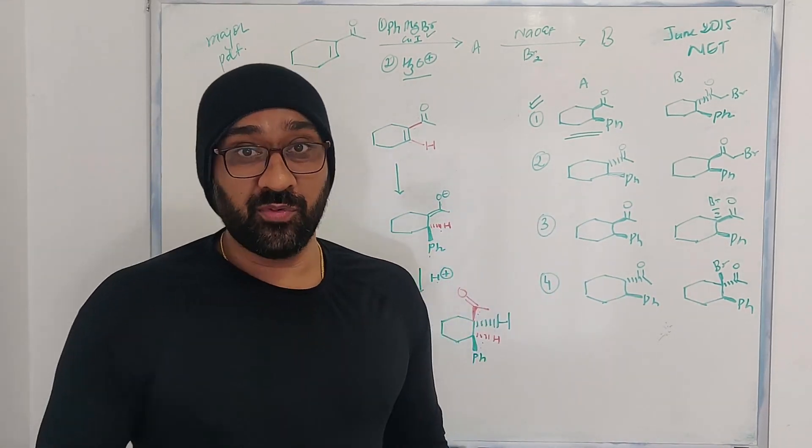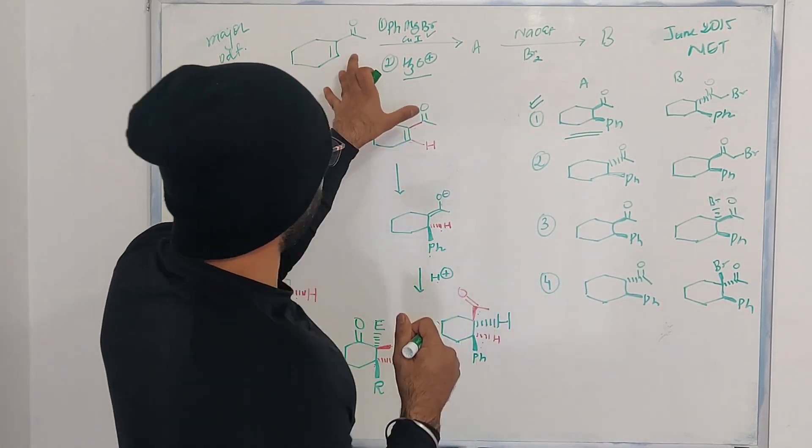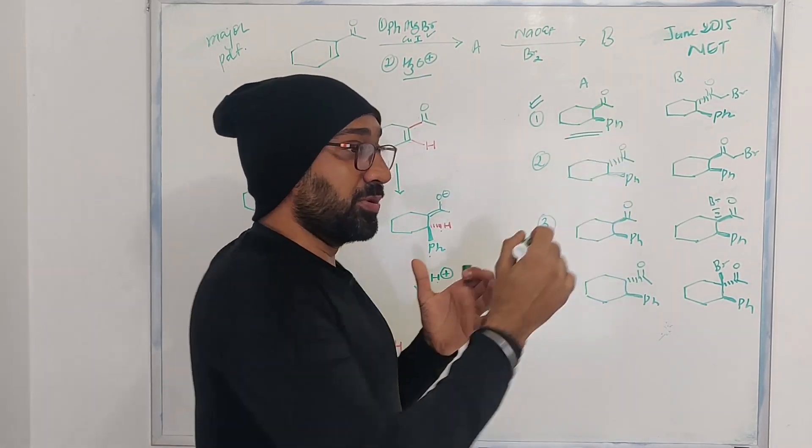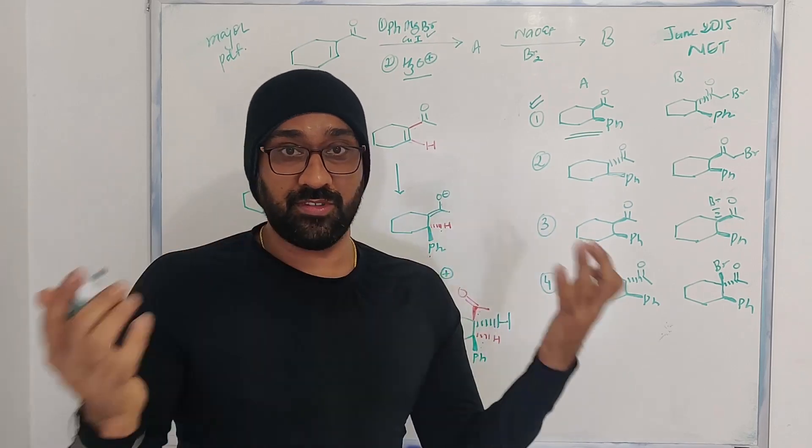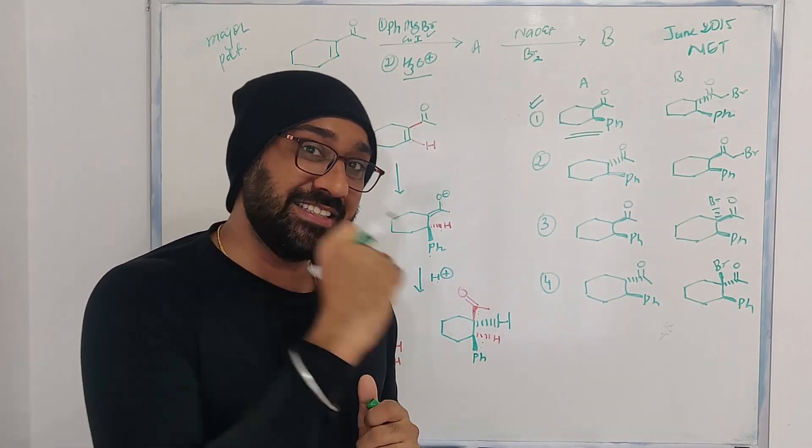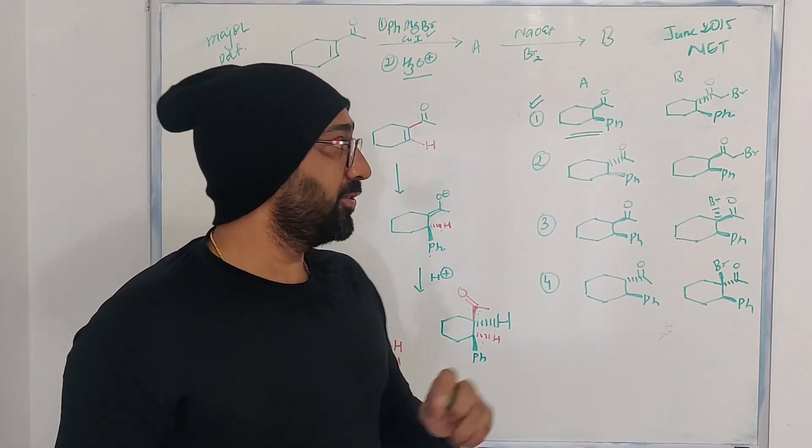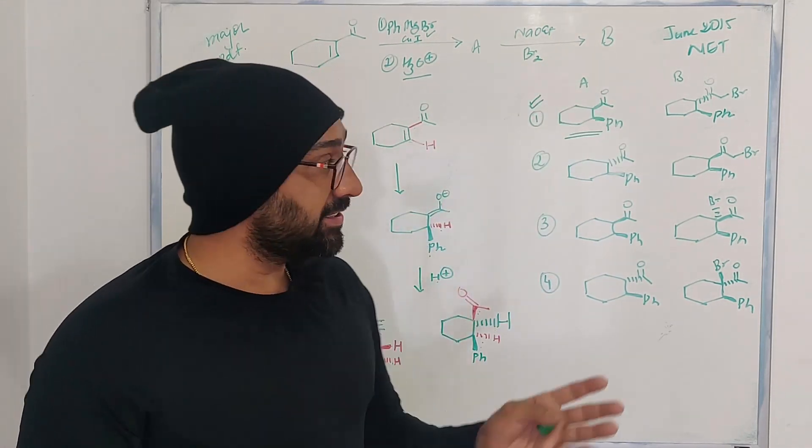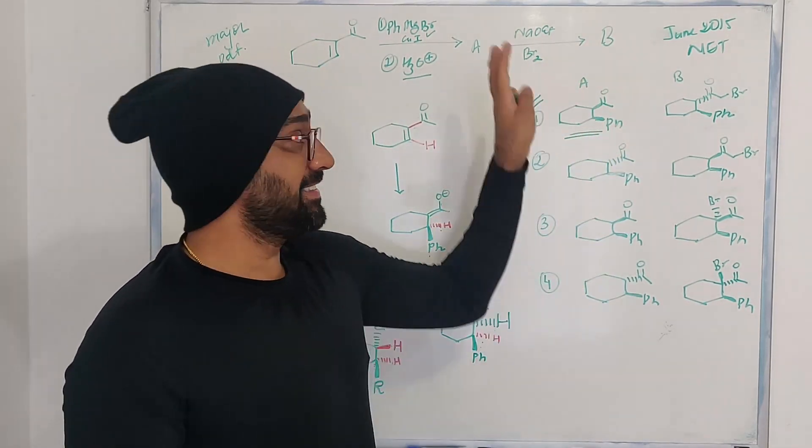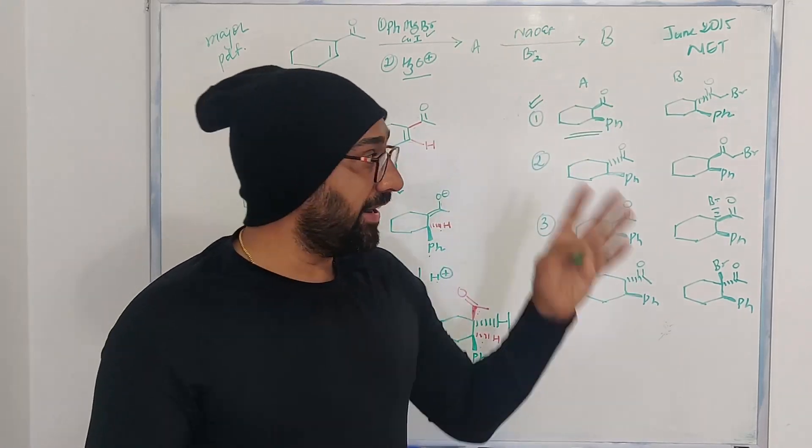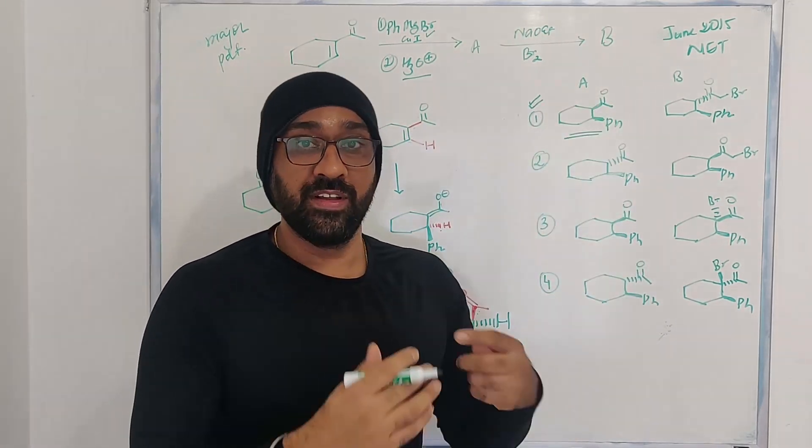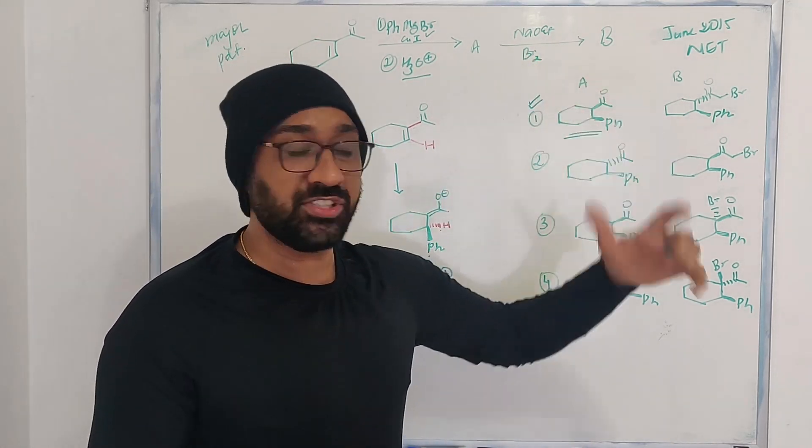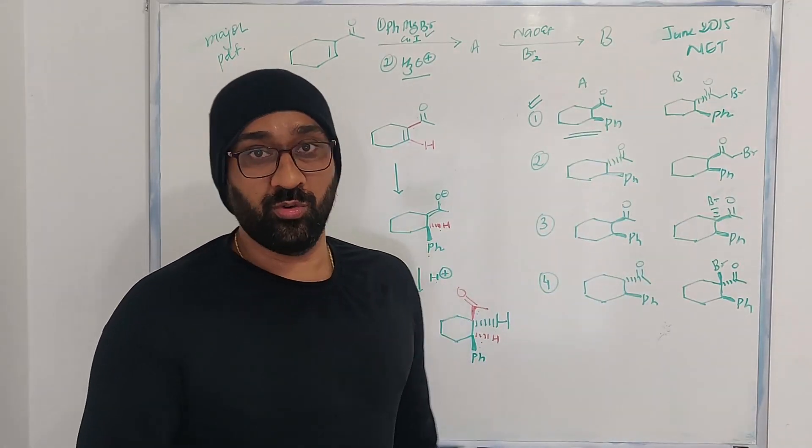It would be very baffling for you guys to see that here in the first step we are doing conjugate addition. So how can these two groups be cis to each other? This is exactly what we are going to understand in this video. Second, A to B - this is entirely what they observe when they carry out the reaction. Basically what is happening is epimerization.